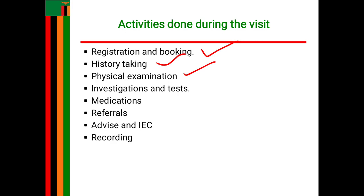From the breast you assess the lower limbs. You check for any physical disabilities, symmetry of the legs, and the size of the foot. You examine for signs of anaemia, tibia, pedal, or ankle edema to help rule out pre-eclampsia, and palpate for any presence of deep vein thrombosis.